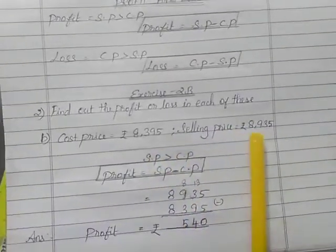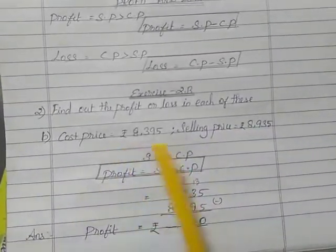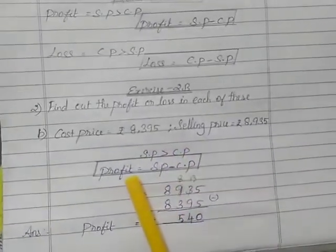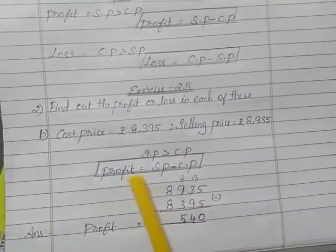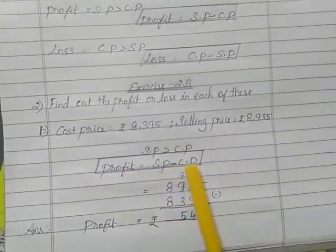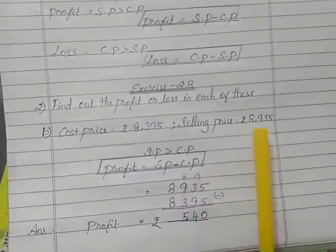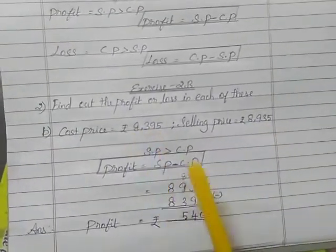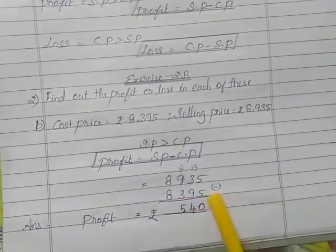Here selling price is more than the cost price, so definitely it is profit. What is the profit formula? SP minus CP. So write the selling price amount, then write the cost price amount. We can subtract directly.